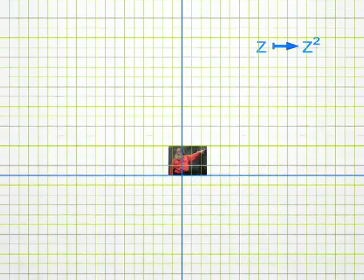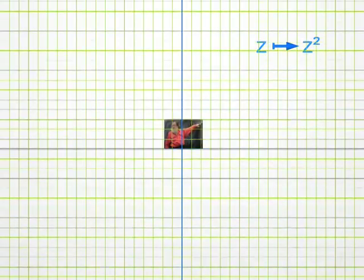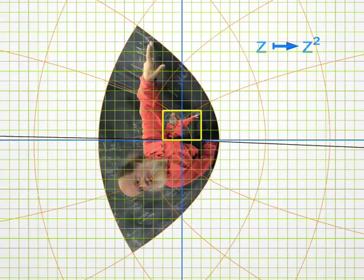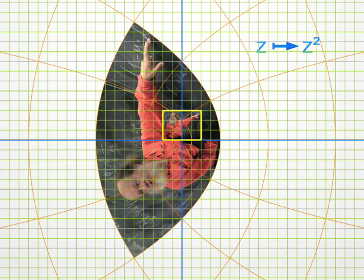You will notice again the same argument doubling. For instance, look at my index finger. Before the transformation, its argument is about 45 degrees. And after the transformation, it points upward, at 90 degrees. But you can also observe that moduli are squared.